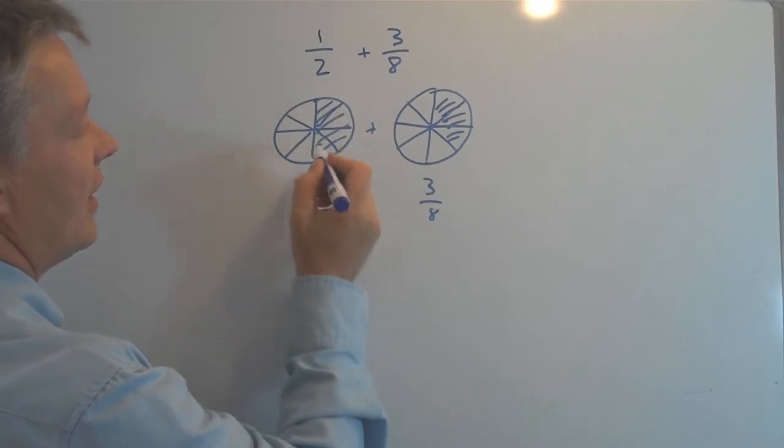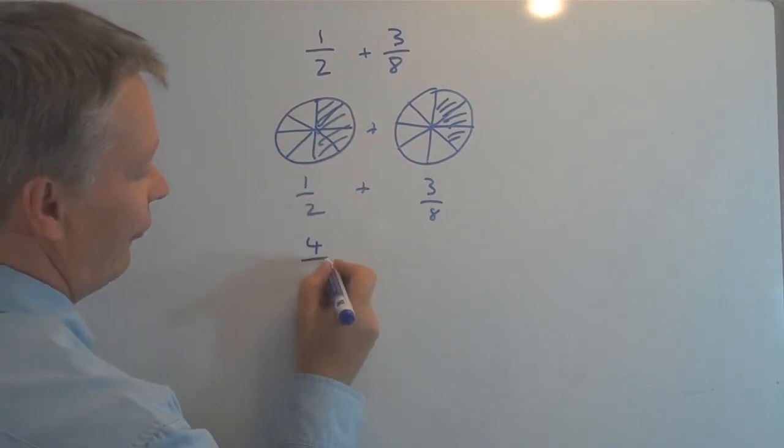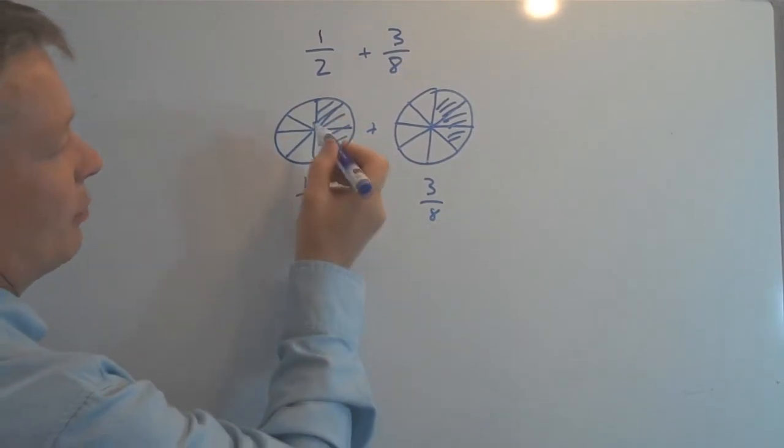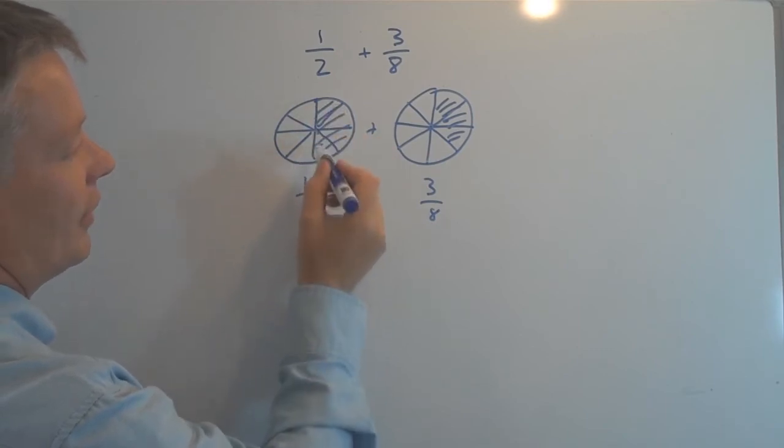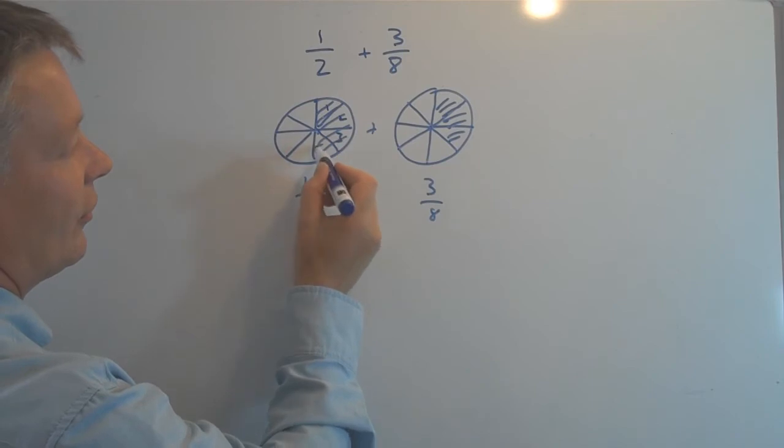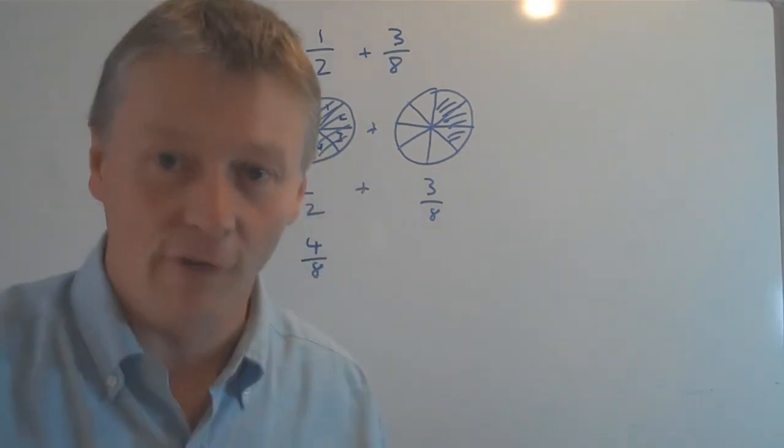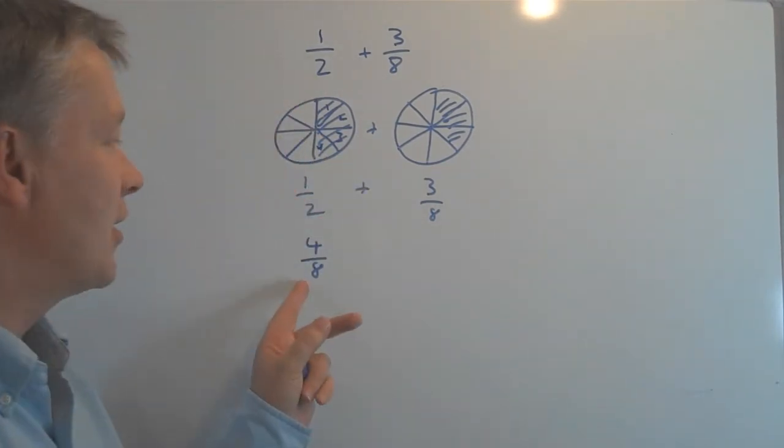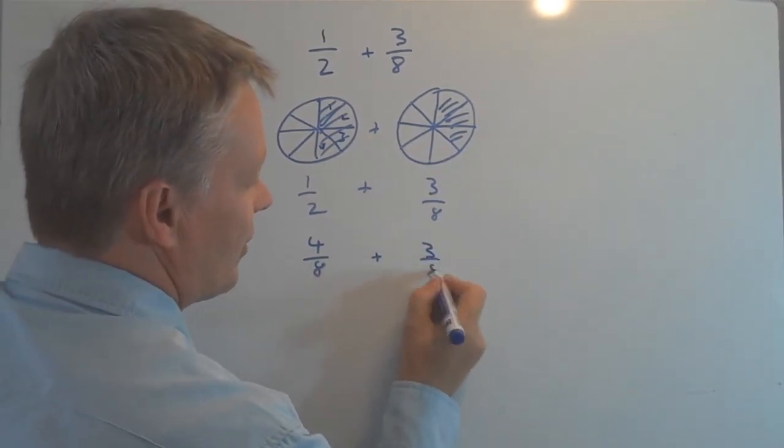So in other words, this side is exactly the same as saying four eighths. Because if I divide the pizza up into eighths, I can count one, two, three, four. So I've got four eighths on this side. And on this side, I've got three eighths.